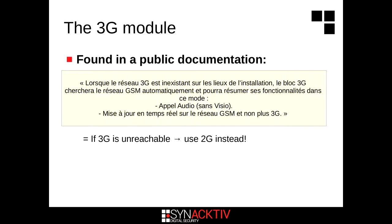In intercoms, it's likely similar to mobile phones because we found in the public documentation that if the 3G network is not reachable, the intercom will use 2G instead. So this is good for us — if we perform a downgrade attack from 3G to 2G and create a rogue base station with a very strong signal, we are likely to trap the targeted intercom.